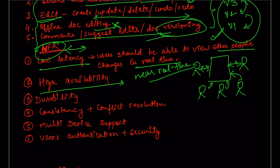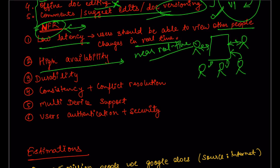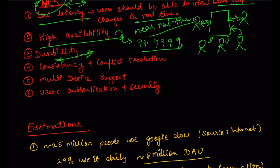High availability is definitely required — we want our system to be highly available, let's say supporting up to five nines of availability. Durability means our storage is durable: once a document is created, it will not be lost unless deleted by the user. The system should handle all mechanisms required — whether replication or whatever is needed — so that the data stored or document created by the user is durable enough and not lost unless deleted.